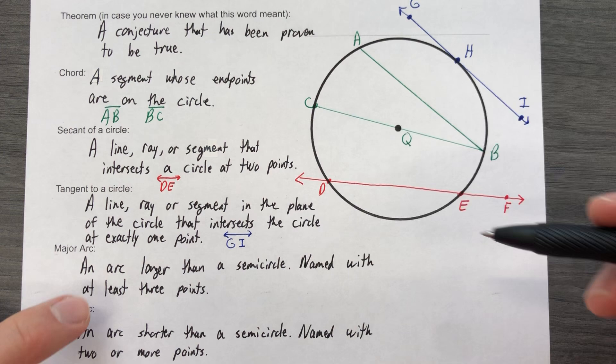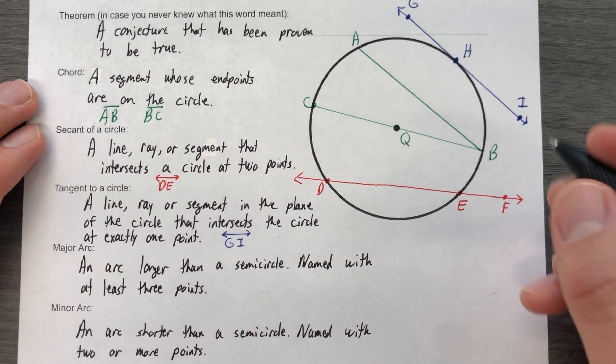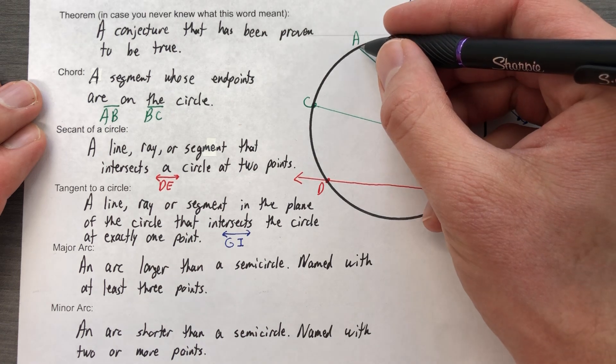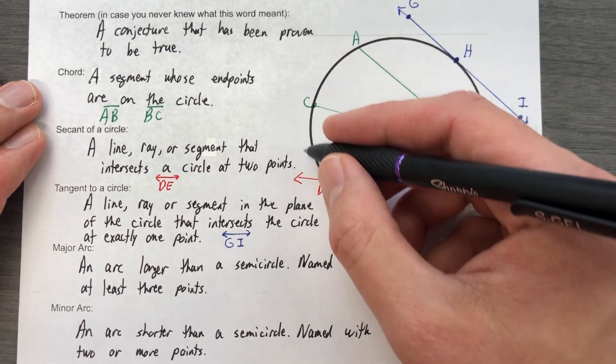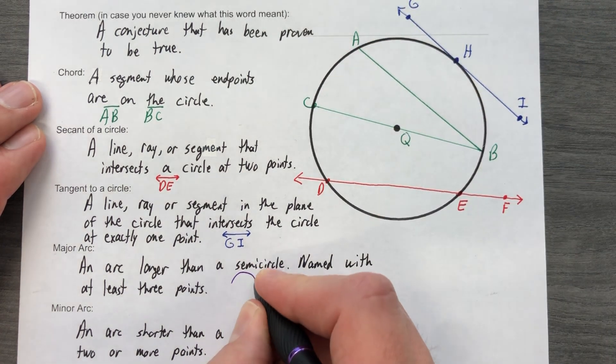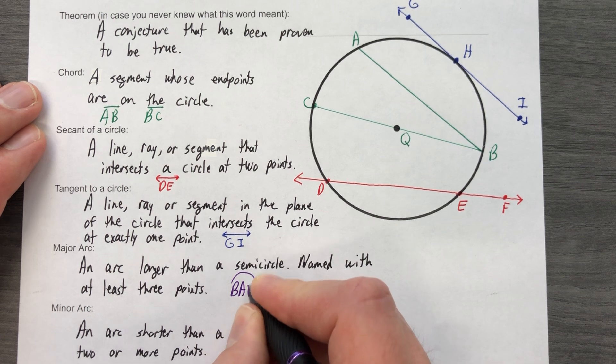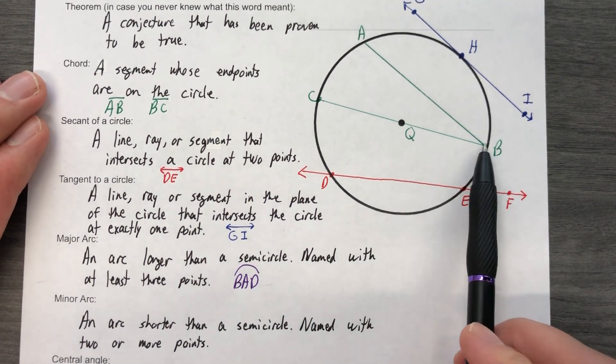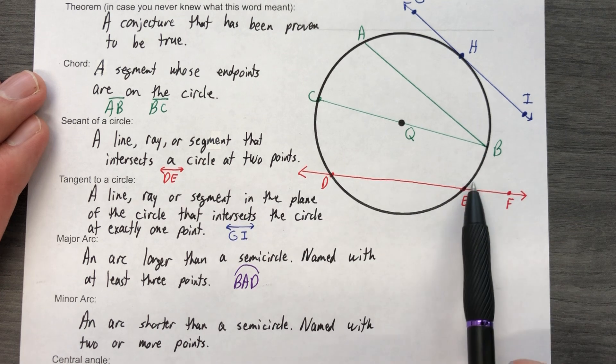But if I want it to be a major arc, then for example like B and then A and then D, I'll call it BAD. B-A-D is a major arc, and I have to use three points because if I just said BD, your assumption might be that you're going this way, which kind of leads me to the next one.